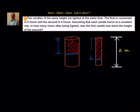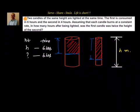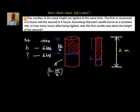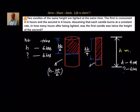For the first candle: height h is fully burned in 6 hours. So in t hours, the height burned is h×t/6. What is left is h minus ht/6. For the second candle, the same logic applies: height h is fully burned in 4 hours, so in t hours, height burned is ht/4. The remaining height of the second candle is h minus ht/4.